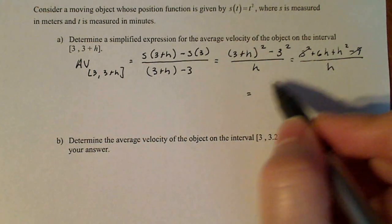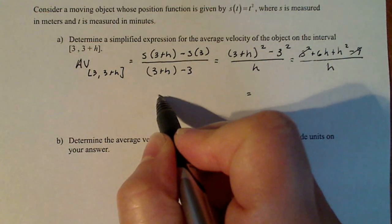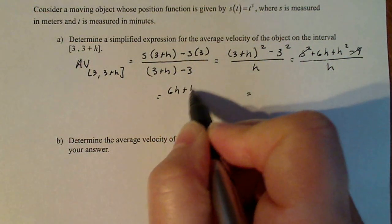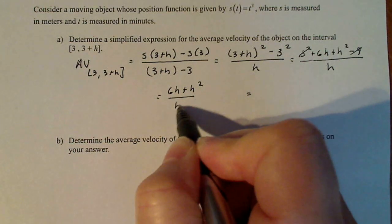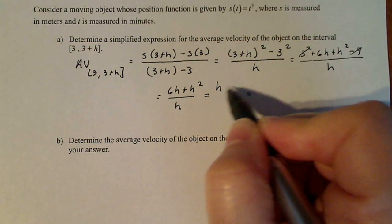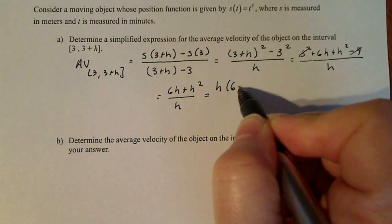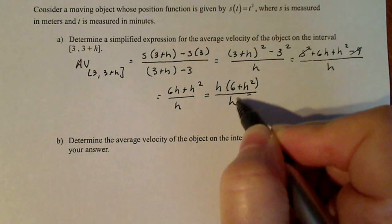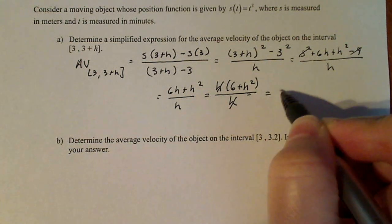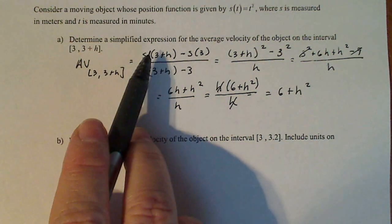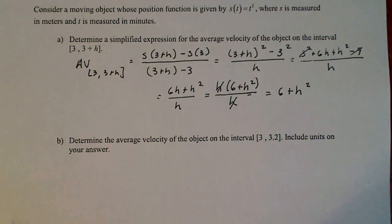And then I'm going to go over here. I'm left with 6h + h² divided by h. And in the numerator, I can factor out one of these h's: h(6 + h) divided by h. Then those h's cancel. And then I'm left with 6 + h as my simplified expression for the average velocity of the object on that interval.